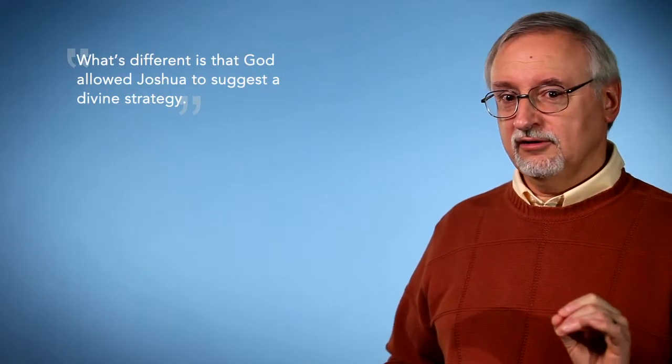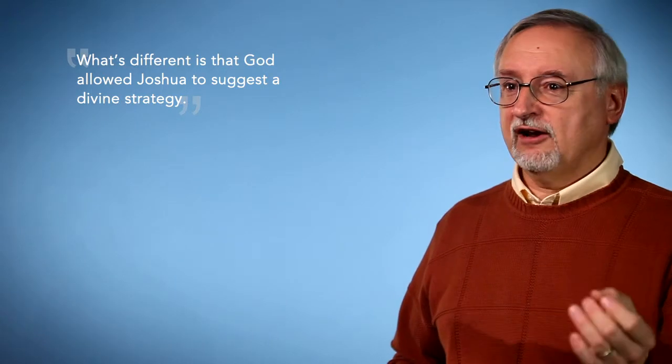What's different is not the celestial phenomenon, what's different is that God allowed Joshua to suggest a divine strategy. After all, when the walls of Jericho came down, it was God who said, march around seven times and the walls will come down, I'll take care of that. A divine strategy comes from God. For Joshua to say, I've got a cool divine strategy. Here's what it is. I want you to do, have this phenomenon occur. Well, that's what was unique, that someone should dare, presume to suggest such a thing to God. But God did it. And so, in that way, God fought for Israel, prompted by Joshua.